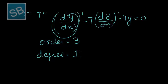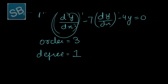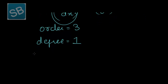Some students mistakenly say the degree is 4, but that is wrong. We have to look at the power of the highest order derivative only. So here order is 3 and degree is 1. To obtain the degree of a differential equation, the equation should be in polynomial form.